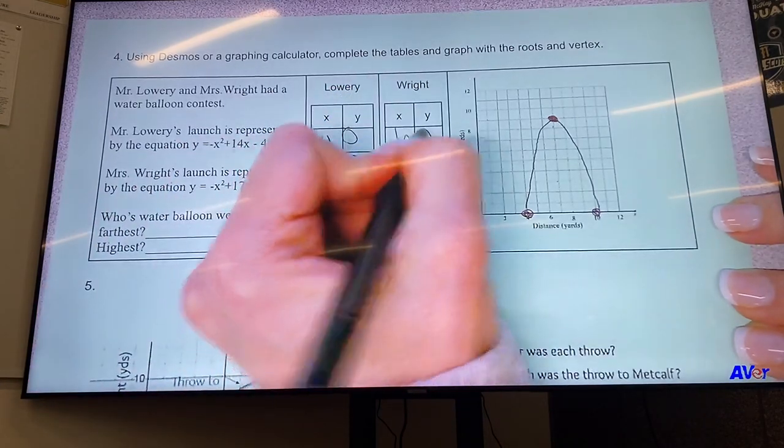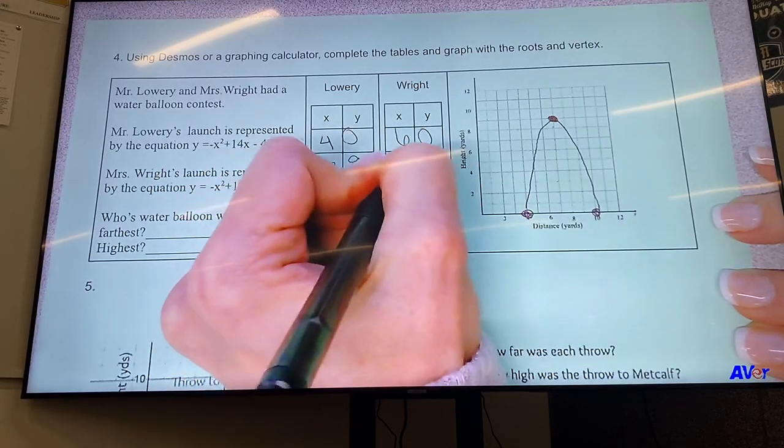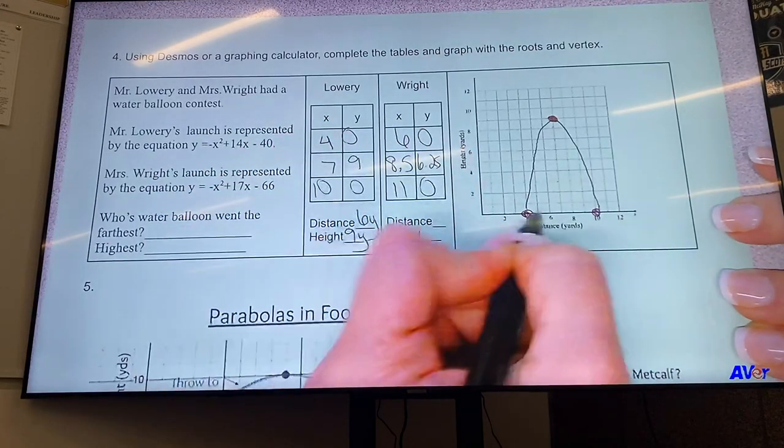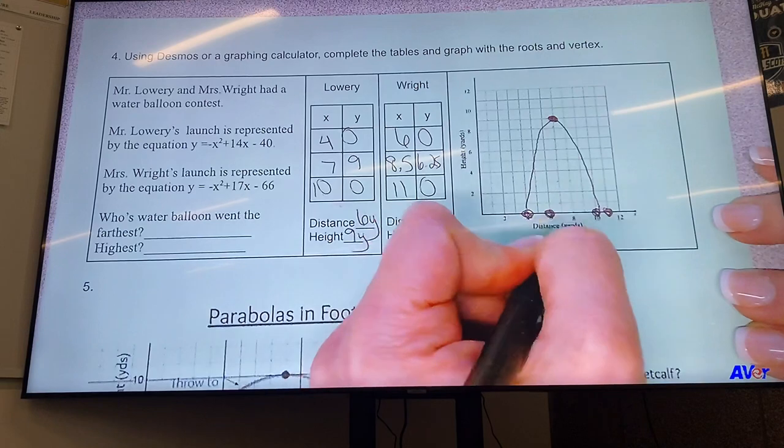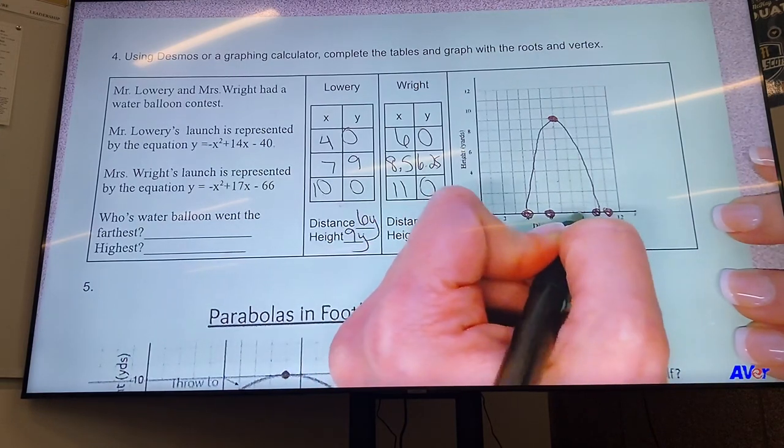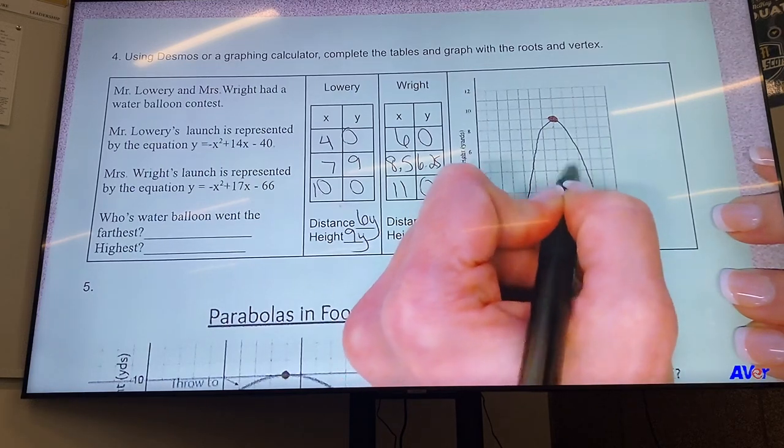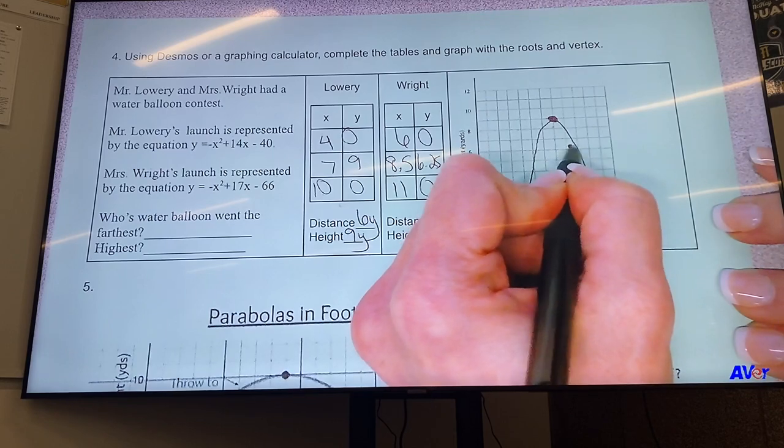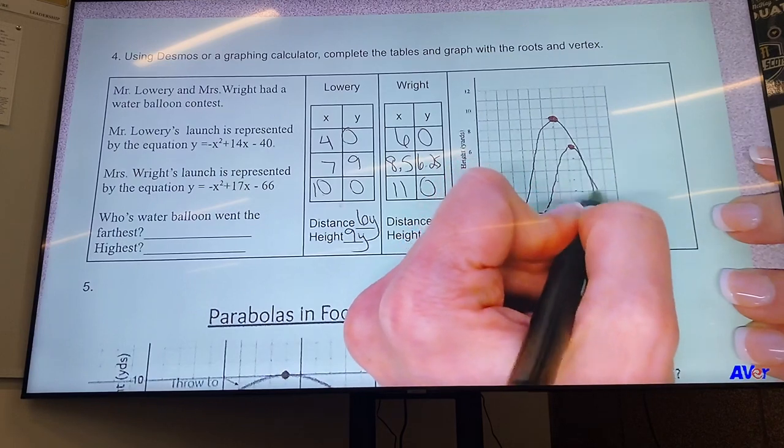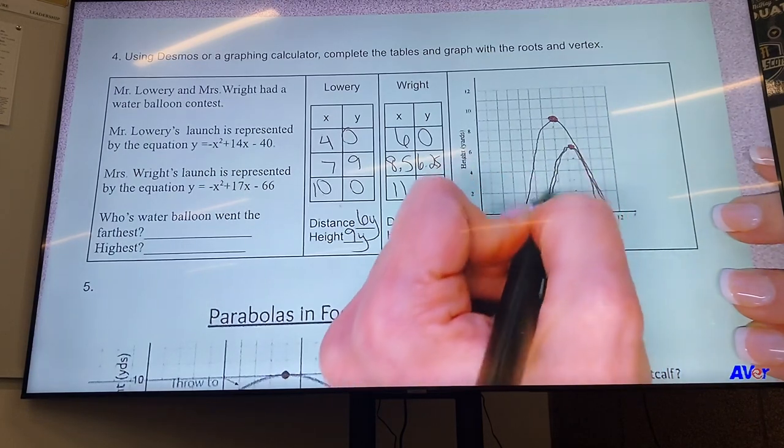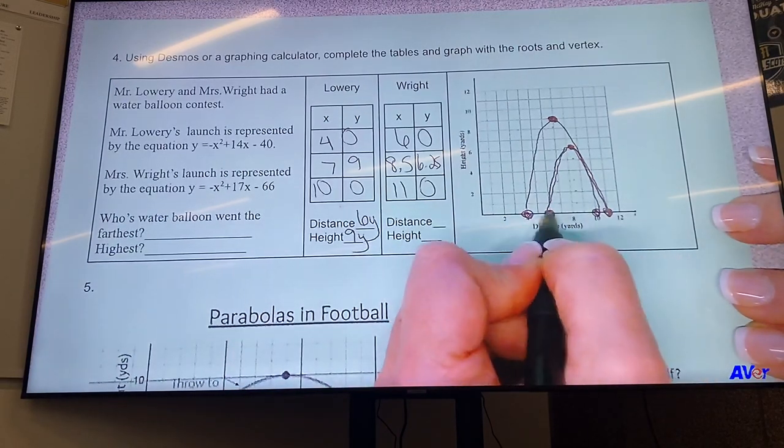And then the vertex was (8.5, 6.25). Okay, so (6, 0) is right here, (11, 0) is right here, and then the vertex is at 8.5 - so a little beyond 8 - and then up to 6.25: 1, 2, 3, 4, 5, 6, just a little beyond 6. It's okay to estimate when you have decimals. So Mrs. Wright's parabola looks something like that.